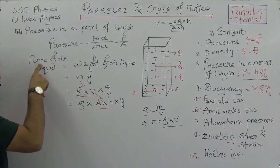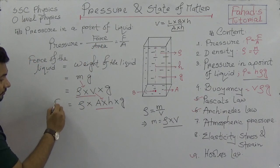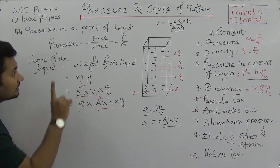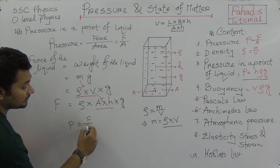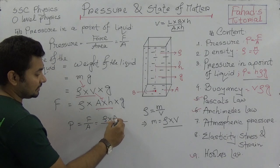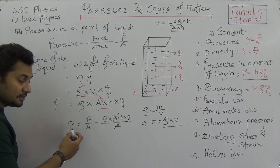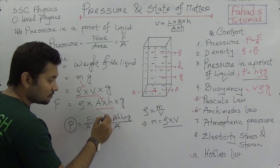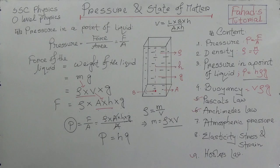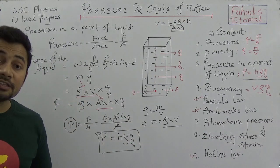Now we implement these into the force equation. F equals ρ × A × H × G. Since pressure equals force by area, we substitute: P = (ρ × A × H × G) / A. The A cancels from both sides, giving us P = H × ρ × G. So the equation is P = HρG — the cross product of these three quantities: height, density, and acceleration due to gravity.